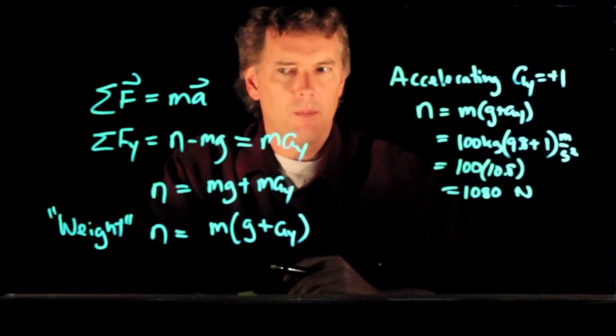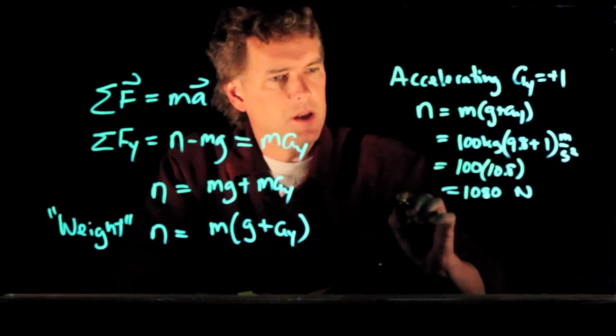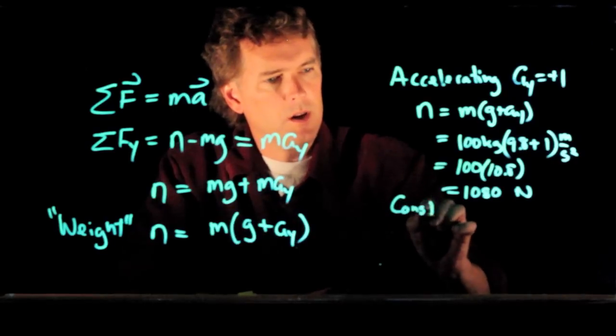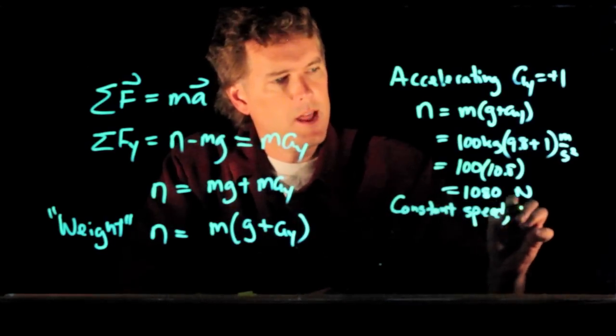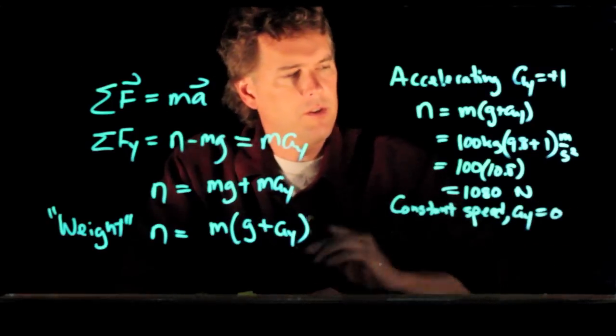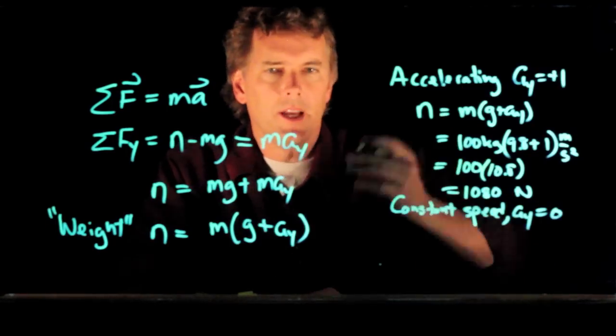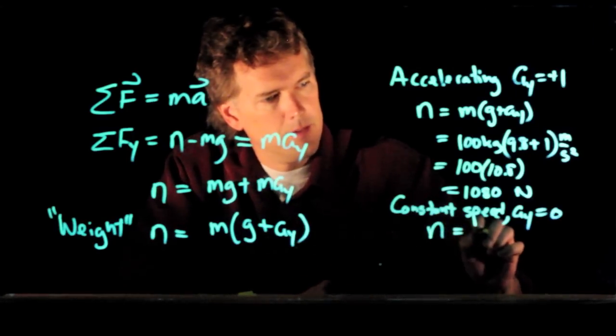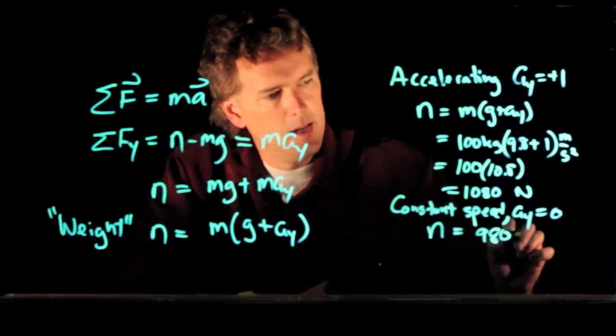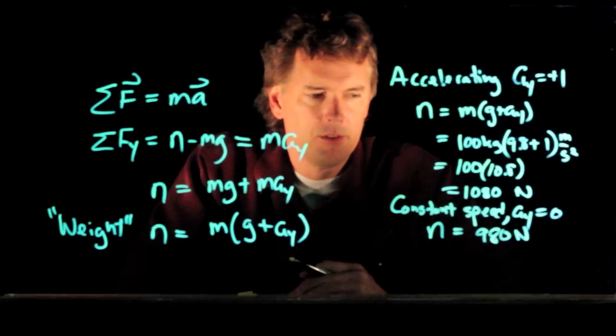What if you are moving up at constant speed? Well, if you're moving up at constant speed, then of course the acceleration is equal to zero. And now you just plug it into the exact same equation that we had with AY is equal to zero. And you get, in that case, your weight is 980 Newtons.